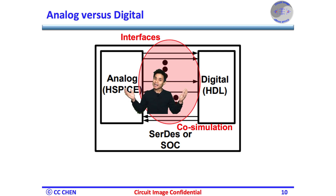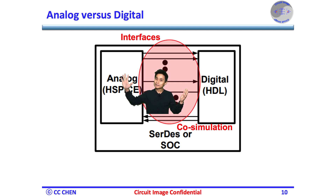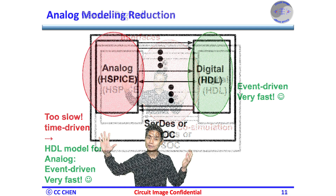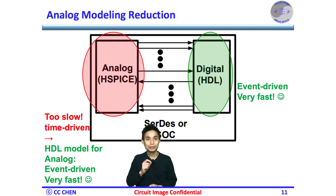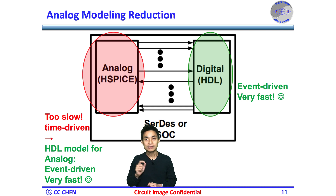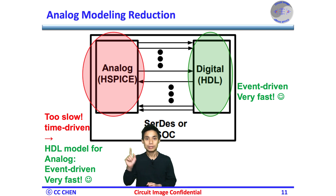Is that fast enough? Of course not. The SPICE for the analog modeling is still too complicated to verify quickly. So, the analog part still slows down the whole mixed signal verification, and we must reduce the analog model complexity.